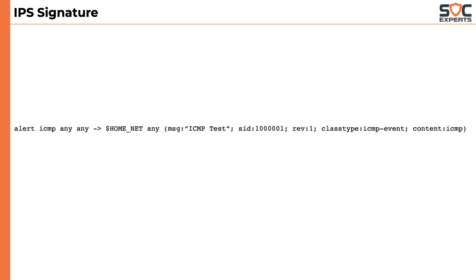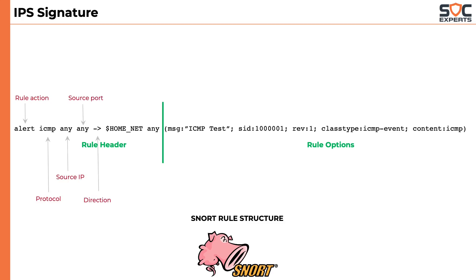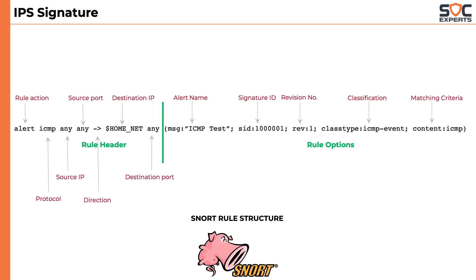Now let's learn a bit more about IPS signatures. An IPS signature looks something like this — it is also called SNORT format. SNORT is an open source IDS. The rule consists of two main parts: rule header and rule options. The rule header tells when the rule should be applied, and the rule option tells what to match in the payload. The main parts include rule action, protocol, source IP address and port number, direction of traffic, and destination IP address and port numbers. In the rule options, we have alert name, signature ID, revision number, classification, and contents to match. Home net refers to the internal network, which can be configured in the SNORT configuration file.